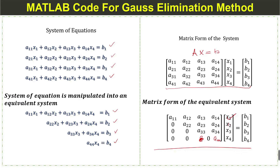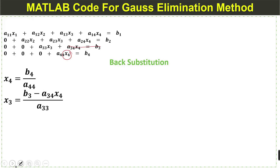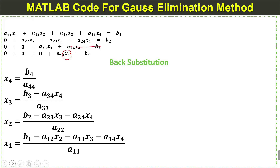After obtaining the upper triangular form, we apply back substitution to find the values of all unknowns. First we find the last unknown, and then similarly we solve the other equations to find x3, x2, and then x1. This is the Gauss elimination method.